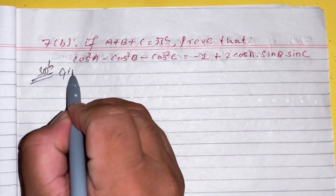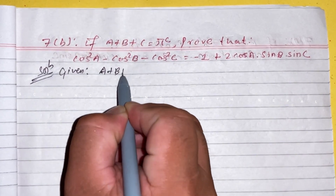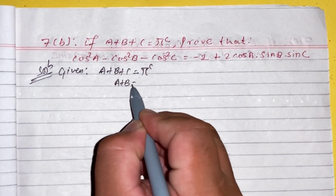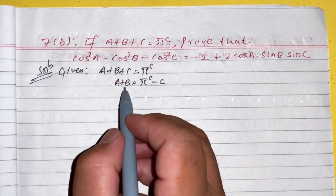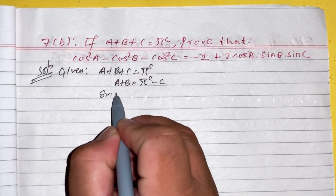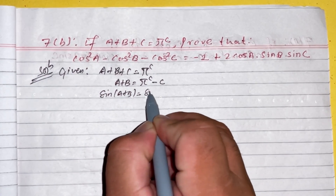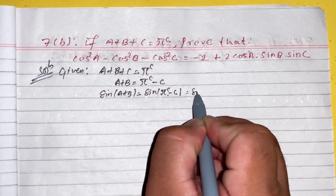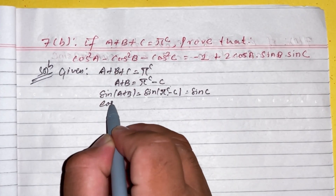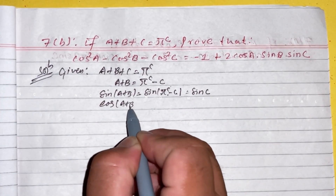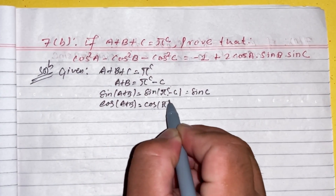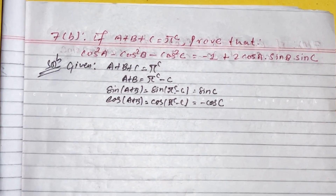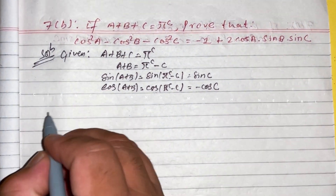Given a plus b plus c equals pi radian, so a plus b equals pi minus c. Taking sin on both sides: sin(a+b) equals sin(pi minus c) equals sin c. Taking cos on both sides: cos(a+b) equals cos(pi minus c) equals minus cos c. Starting with LHS.